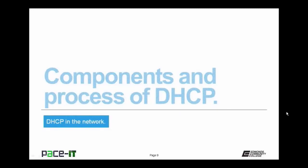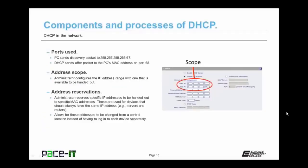Now let's talk about components and the process of DHCP. We're going to begin by talking about the ports used. The PC sends its discovery packet out on the broadcast address 255.255.255.255 on UDP port 67. When the DHCP server responds, it responds to the PC's MAC address on UDP port 68. That's important to remember — the PC uses UDP port 67 and the DHCP server responds on UDP port 68.